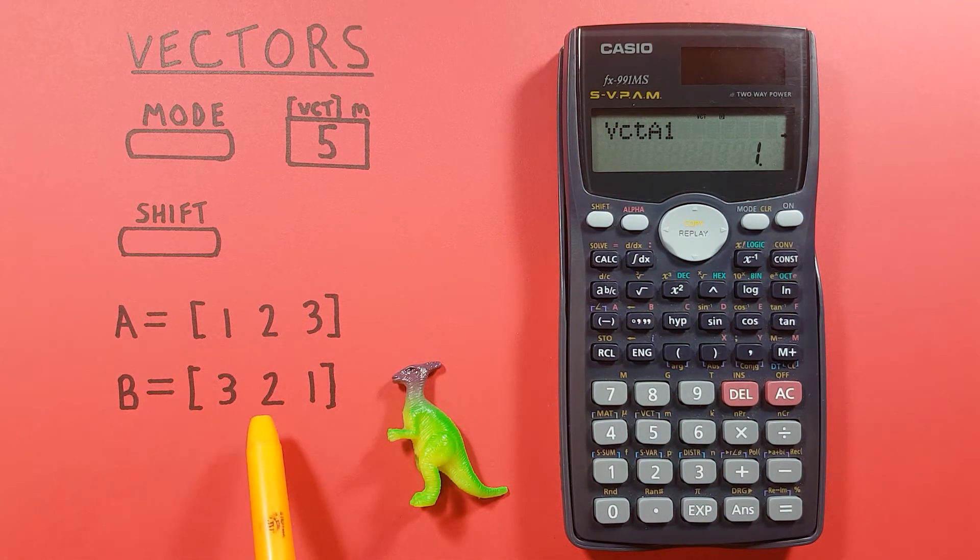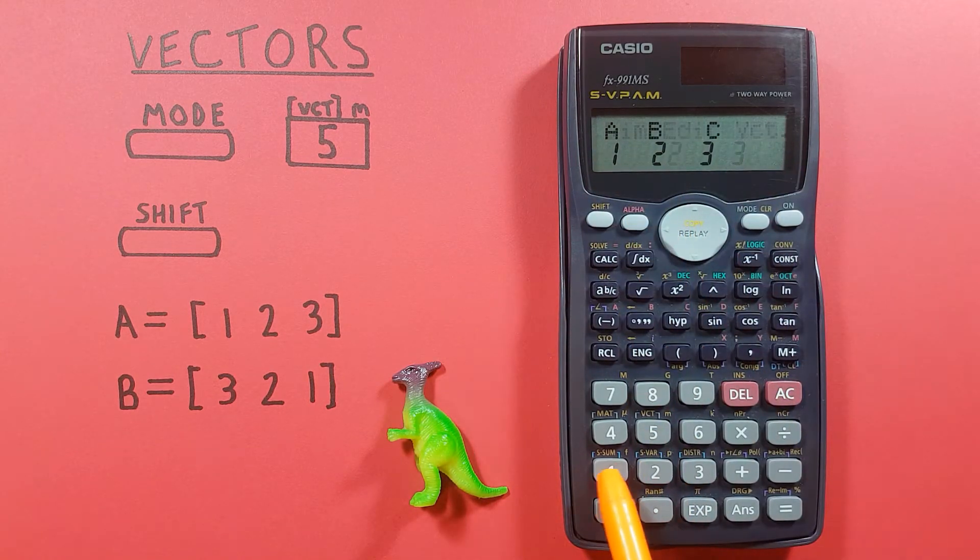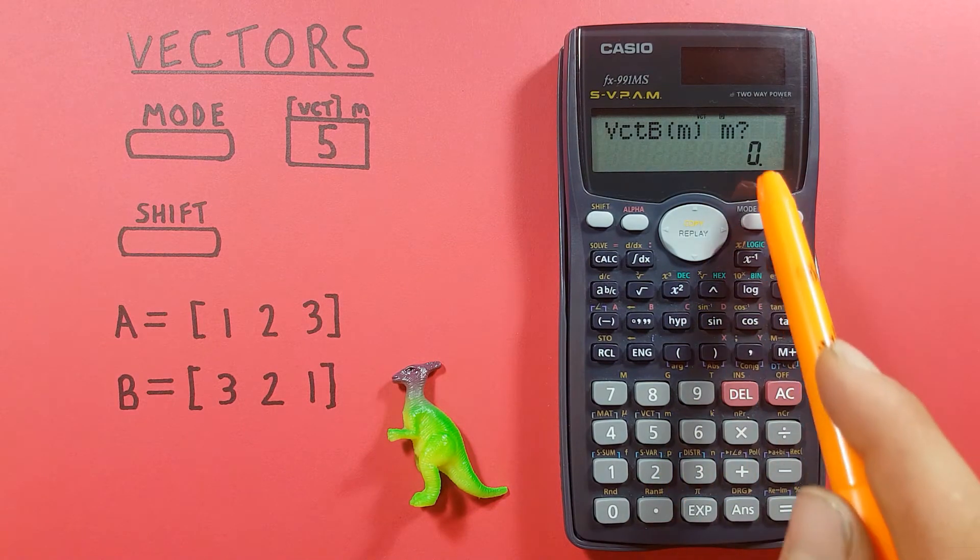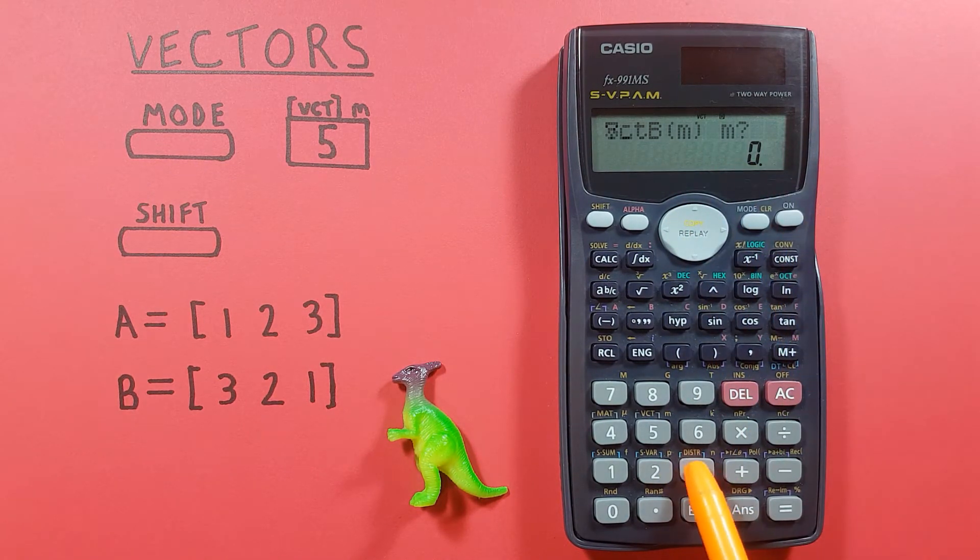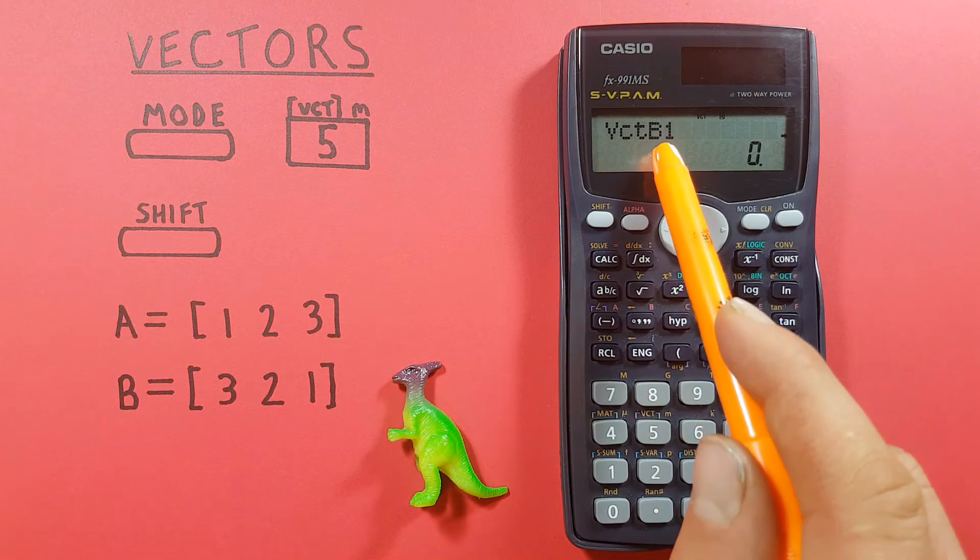Let's enter our B vector so again we press shift 5 to get to this menu, 1 for our dimensions, and 2 for vector B. It'll ask us how many dimensions again, remember we're doing 3 so 3 equals.